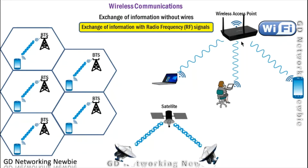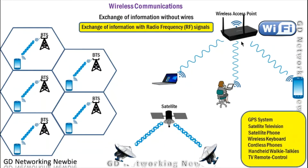We also have satellite communications, where a dish antenna on Earth connects to a satellite in orbit using a wireless medium — it is not possible to connect a dish antenna to a satellite with a wire. Wireless technology makes it possible to send signals from the dish antenna to the satellite. In addition, we have GPS systems, satellite television, satellite phones, wireless keyboards, cordless phones, and many other applications that use wireless communication.